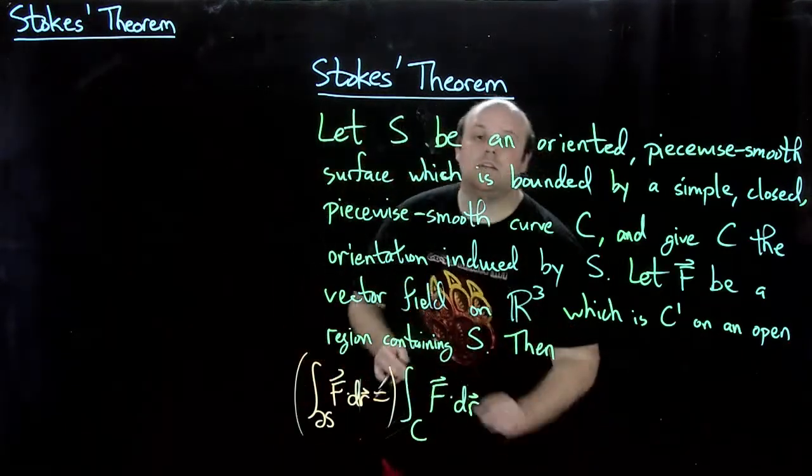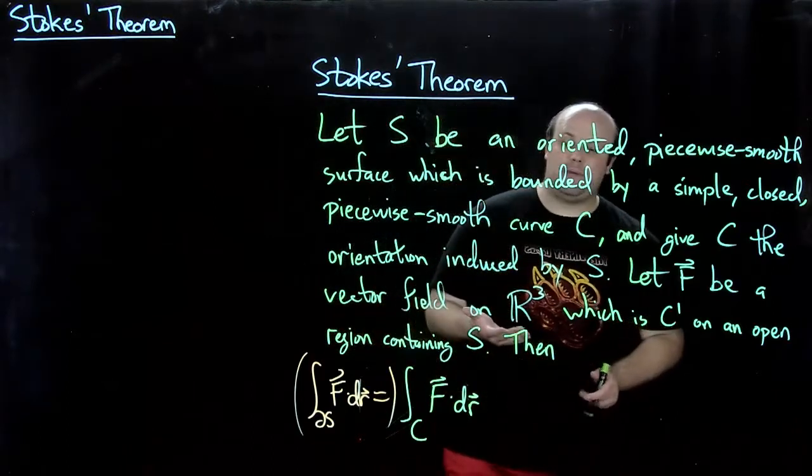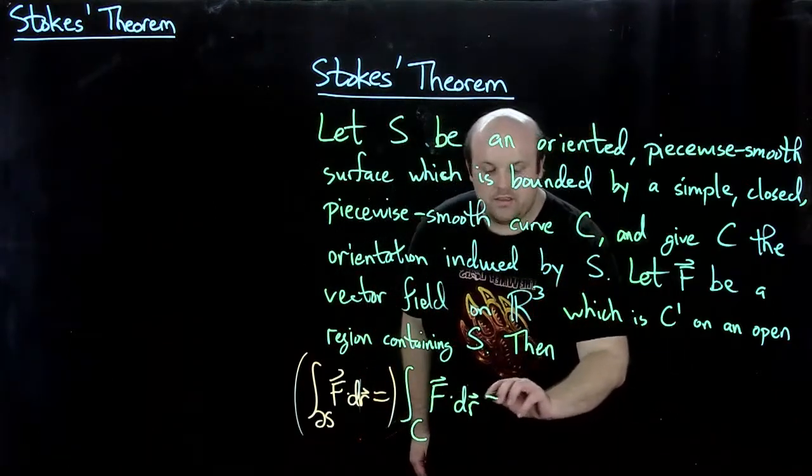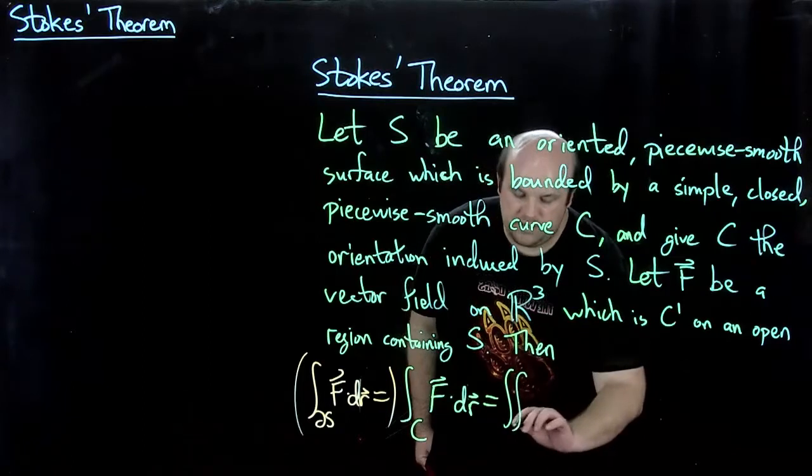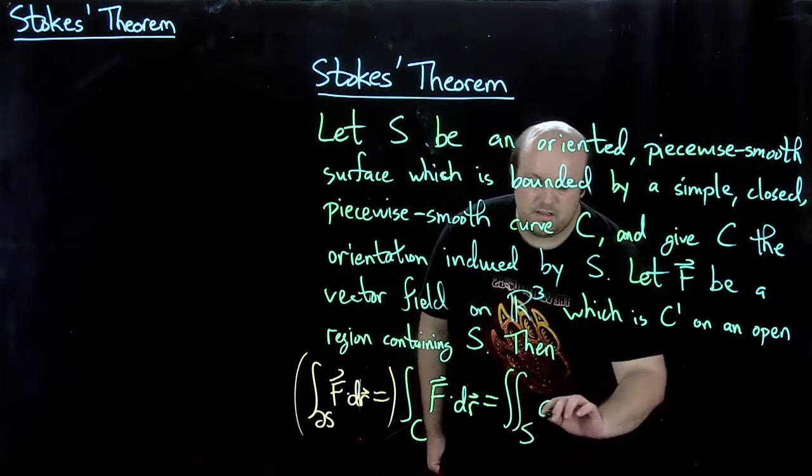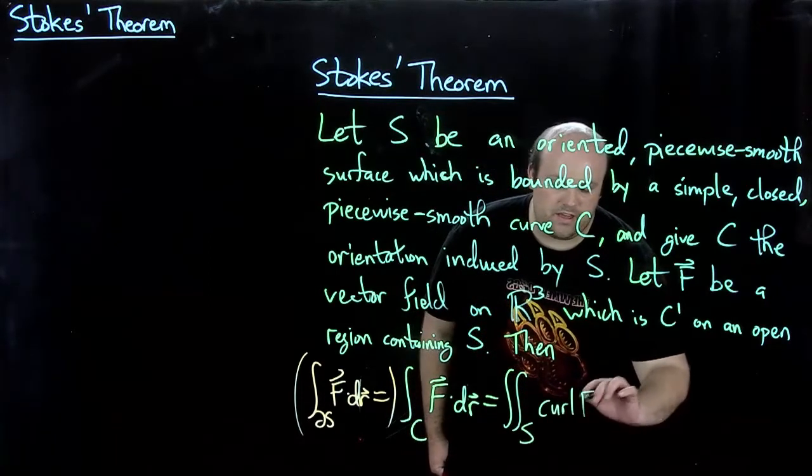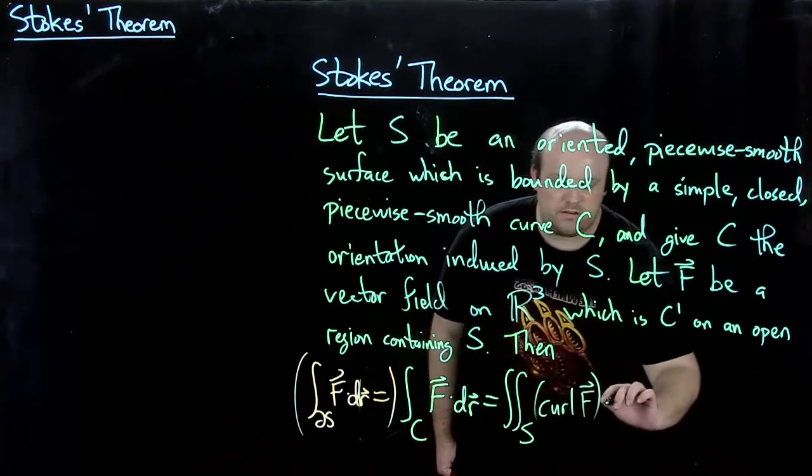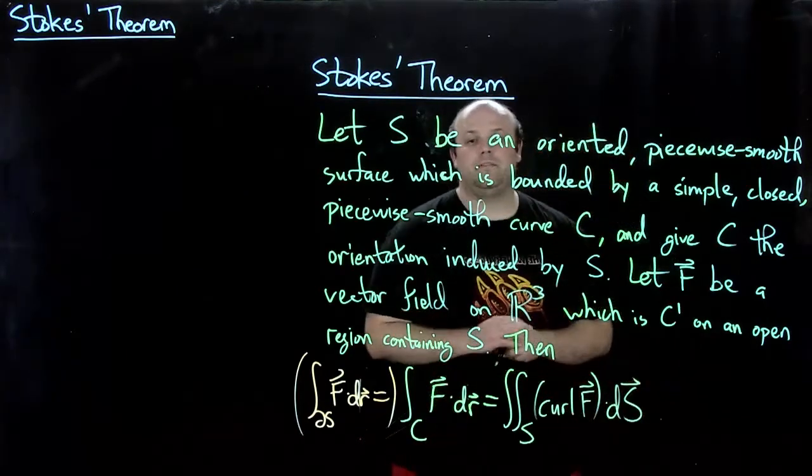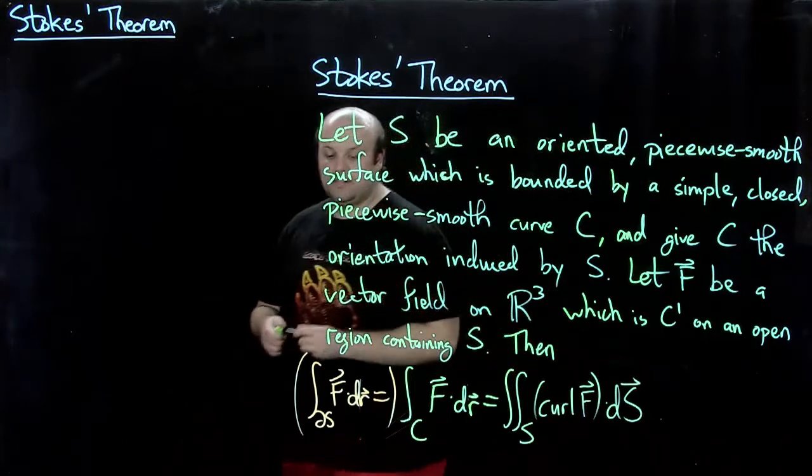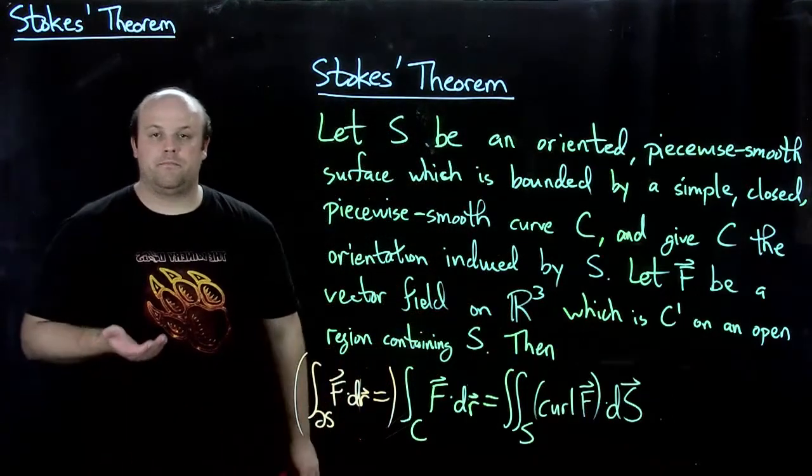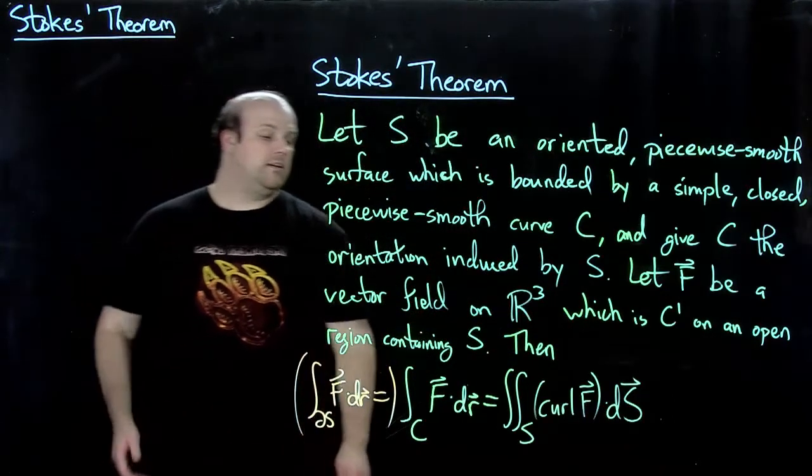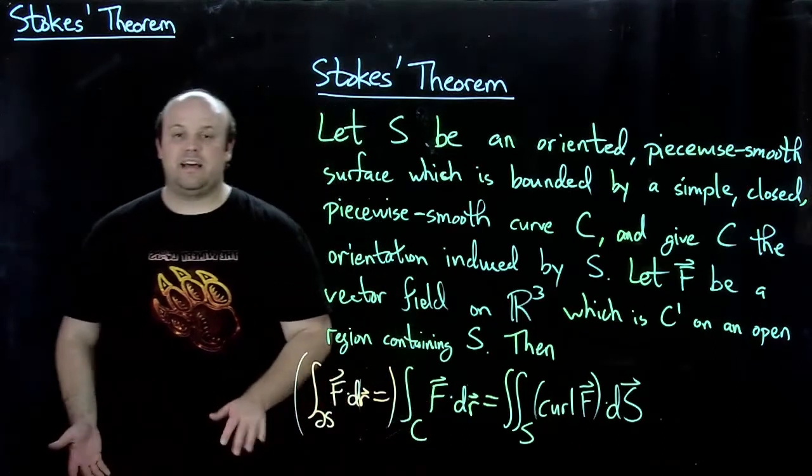Okay, so then the line integral around the boundary is equal to the integral over the surface of the curl of F dot dS. So the curl is a type of derivative, essentially.